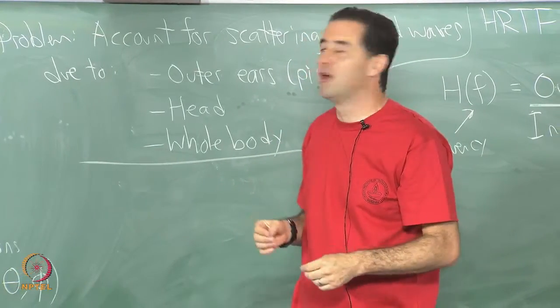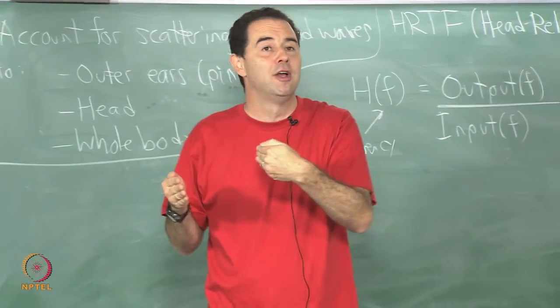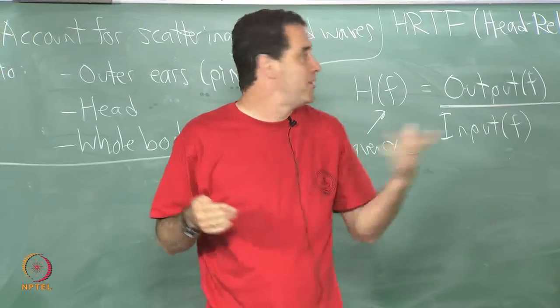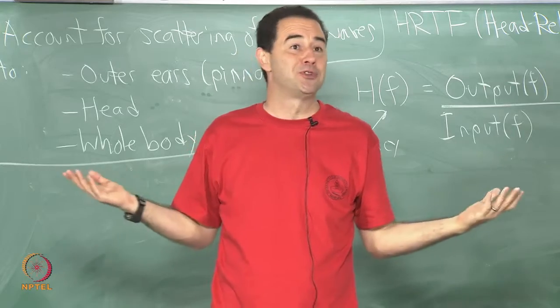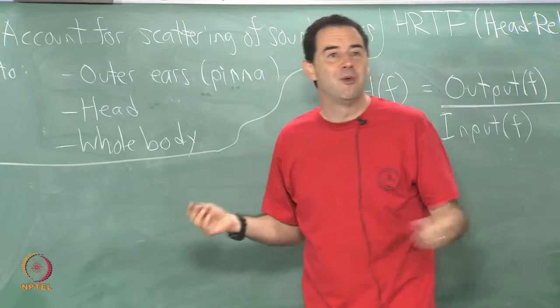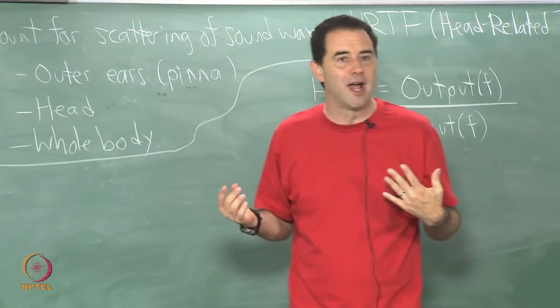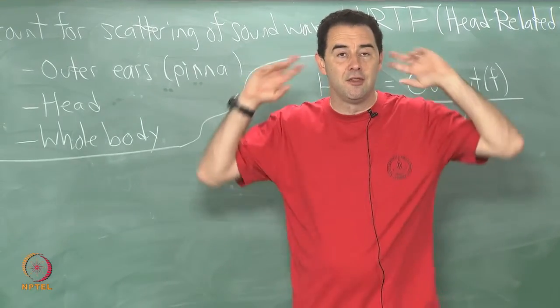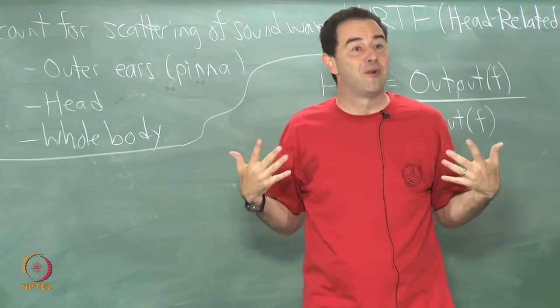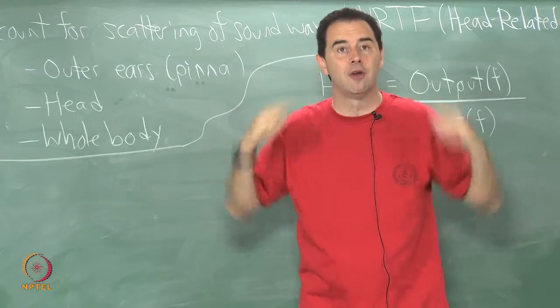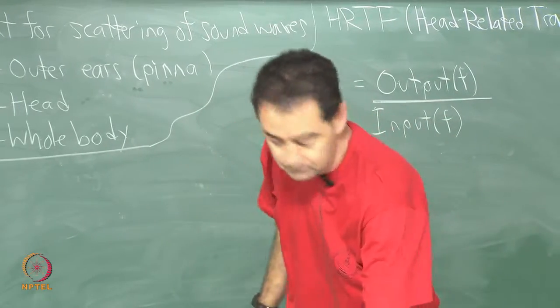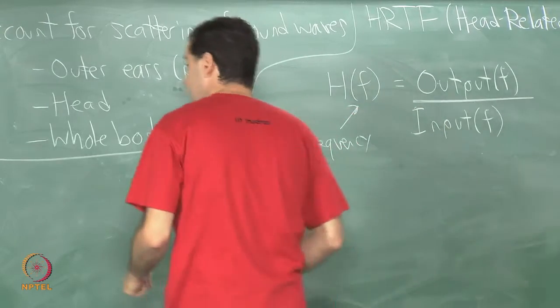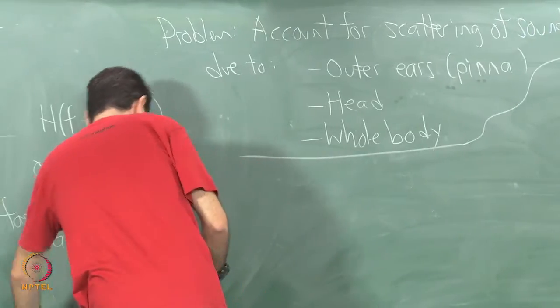You take that into account and then you apply that as a kind of distortion at the end. When you figured out how you are going to render the audio signal, at the end of that you can apply this filter as a kind of distortion, just as we have optical distortions in the video rendering case. We have this audio distortion that we apply to take into account the additional scattering of sound before it goes into the inside of our ear, the inner ear part.